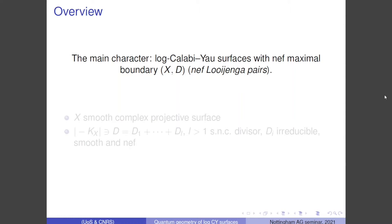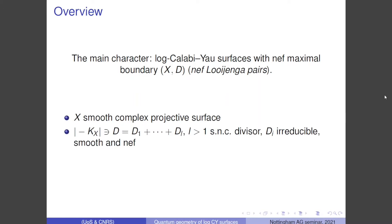These are pairs (X, D), also going by the name of NEF Looijenga pairs, where X is a smooth complex projective surface and D is a fixed divisor which throughout the talk will be anti-canonical — a singular anti-canonical divisor with simple normal crossing singularities. So it will be an anti-canonical cycle of rational curves in X, written as D = D₁ ∪ … ∪ Dₗ, with each Dᵢ smooth and NEF.